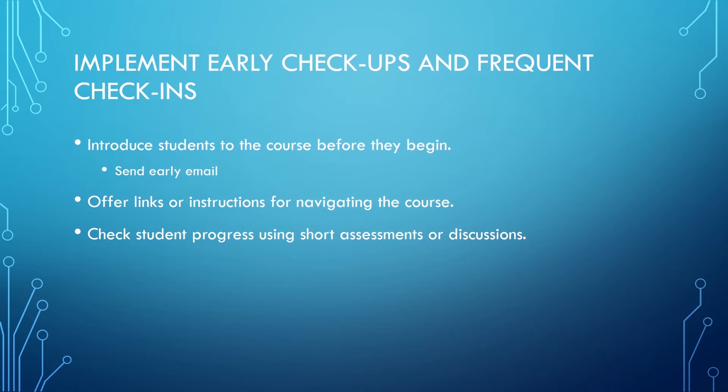Check student progress using short assessments or discussions. Using very short quizzes — graded or ungraded — or even discussion forums are a good way to find out who is attending the class and who may have dropped out or who is having difficulty being able to attend your course regularly.